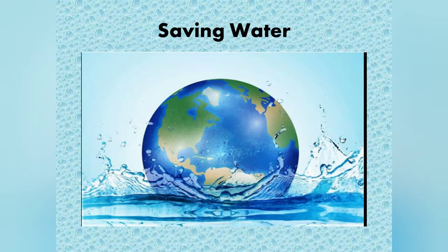Now our next topic is saving water. How can we save water? Children, do you know our earth is made up of 71% water and 29% ground? But from that 71%, only 2% water is usable. The rest is all salty — that salty water is in oceans and seas. So only 2% is usable water. Imagine how very little that is for the whole world. So it is very important to save water.